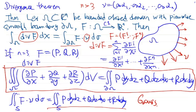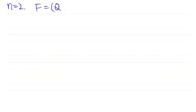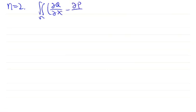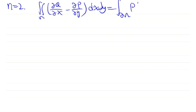How about the Green formula? For n equal to 2, we take F to be the vector field (Q, −P). The divergence theorem then says that the integral of (∂Q/∂x − ∂P/∂y) dx dy over ω equals the integral over the boundary of P dx + Q dy. Let me explain why this is a special case of the divergence theorem by taking F = (Q, −P).